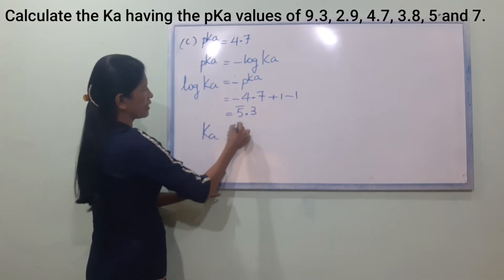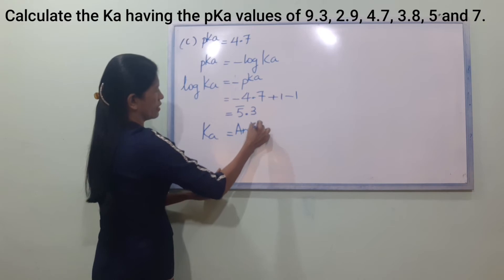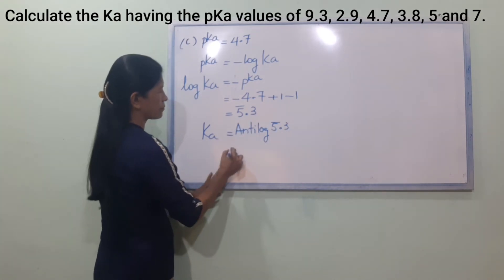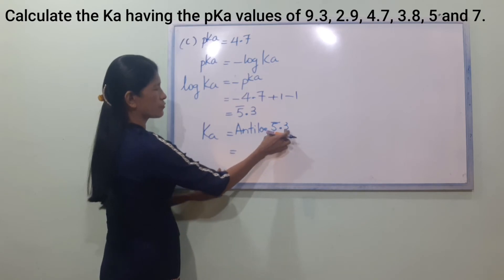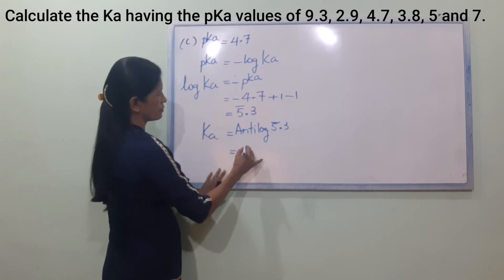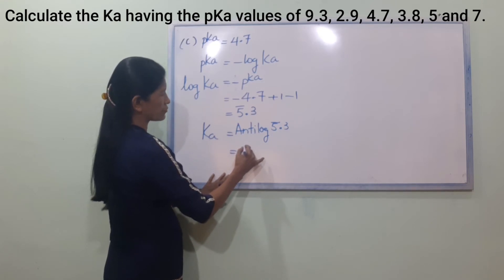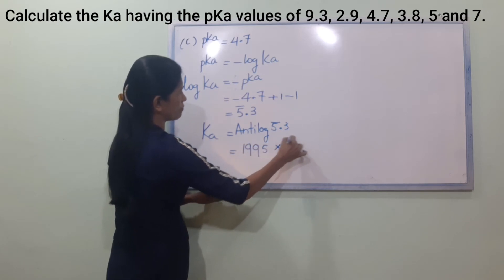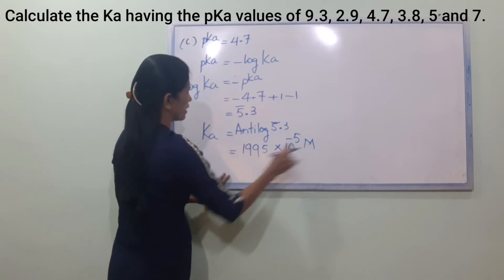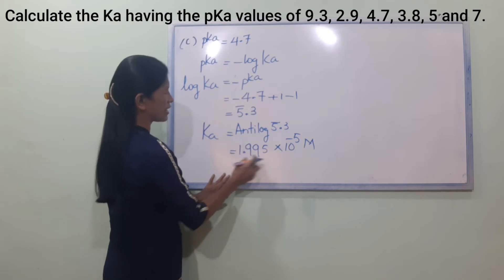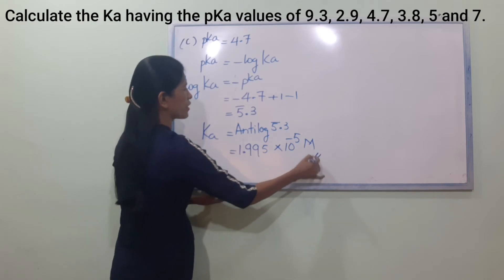So PKA gives us Ka. We must have 4.8, equal to 3.3, because that is equal to 4.5. The result is 1.995 into ten power minus 5.